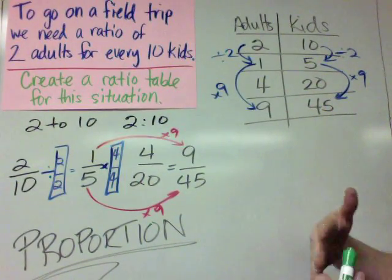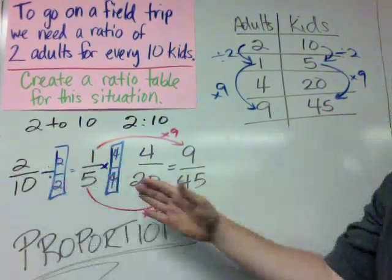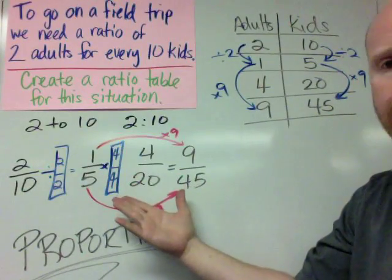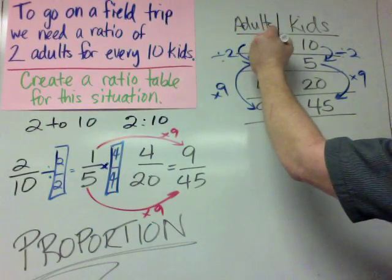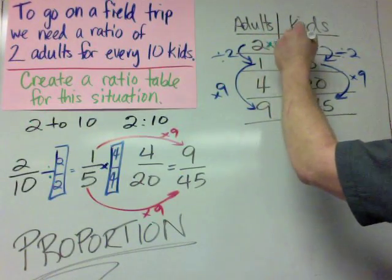But by writing it this way, we kind of might be able to see a new pattern that doesn't show up really obviously over here. And the new pattern is this horizontal relationship.